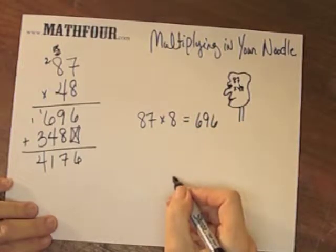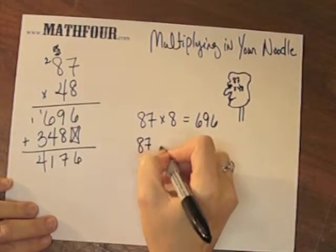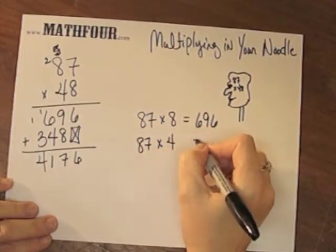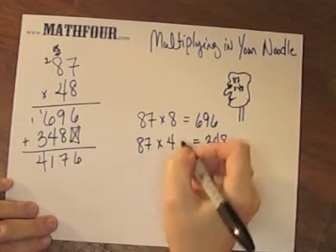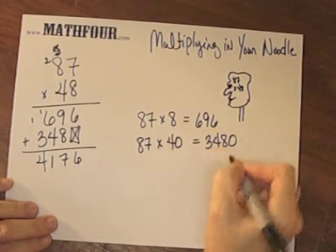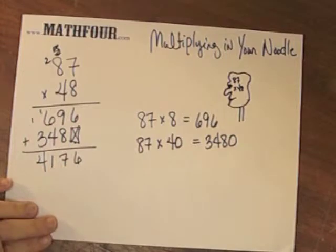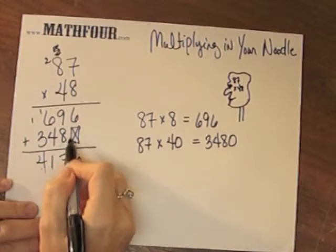And then we multiplied 87 times 4. And that's what 348 is. But we really multiplied 87 times 40. That's why we got that number. Put that space there, shoved over because we have a placeholder.